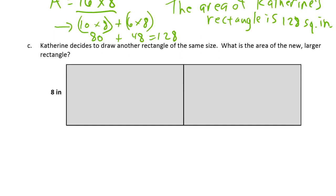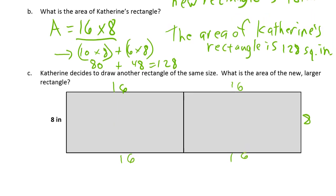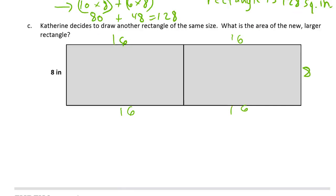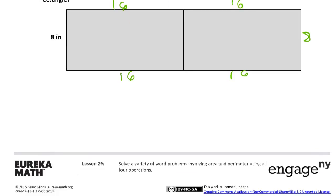Catherine decides to draw another rectangle of the same size. What's the area of the new larger rectangle? So this is an eight by sixteen. And she put another eight by sixteen. So this area is twice as big as the last one. So if the last one was one hundred twenty-eight, it's going to be one hundred twenty-eight times two.